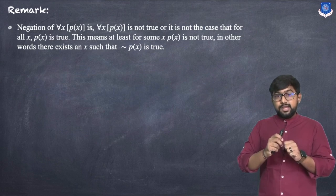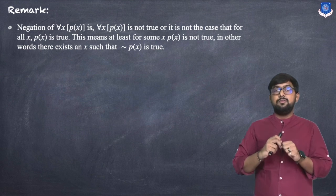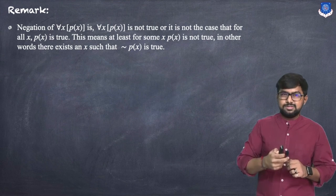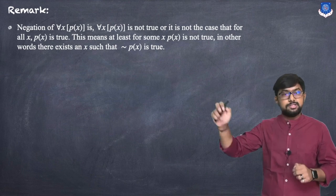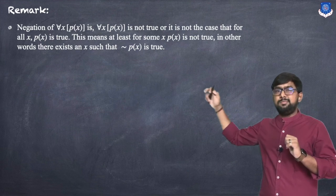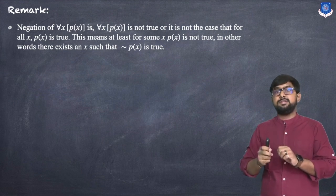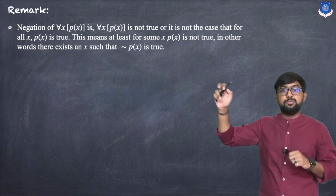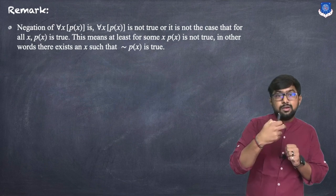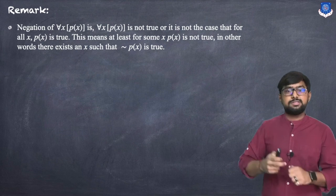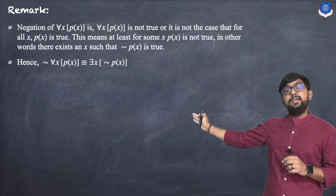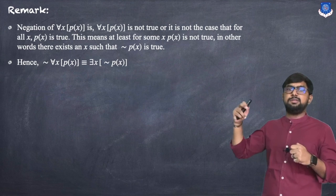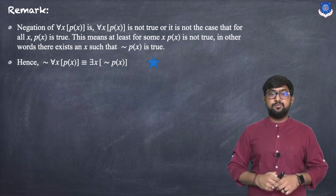The negation of '∀x, P(x)' means it is not the case that for all x, P(x) is true — so at least for some x, P(x) is not true. In other words, there exists an x such that ¬P(x) is true. In symbolic form: ¬(∀x, P(x)) ≡ ∃x, ¬P(x). This is important and will be used in examples.